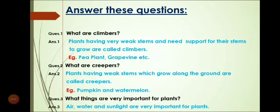Plants having very weak stems and needing support for their stems to grow are called Climbers. Example: Pea Plant and Grapevine. Question 2: What are Creepers? Plants having weak stems which grow along the ground are called Creepers. Example: Pumpkin and Watermelon.